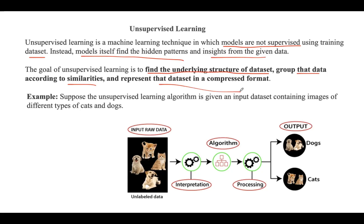Suppose an unsupervised learning algorithm is given an input dataset containing images of different types of cats and dogs. The algorithm is never trained on the given dataset, meaning it has no idea about the features. The task of the unsupervised learning algorithm is to identify image features on its own. It performs this task by clustering the image dataset into groups according to similarities between the images.